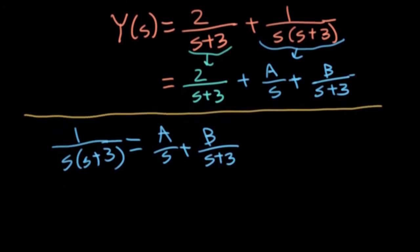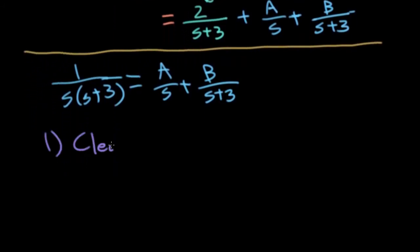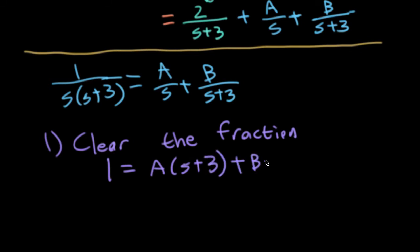And now there's a couple of approaches you could make. One approach would be to clear the fraction. You would multiply all the terms on both sides of the expression by this denominator. So on the left, you would wind up with 1 equals A(s plus 3) plus B times s, then you would match up the terms according to their particular powers of s. So s to the 0, well, that's just our constant term.